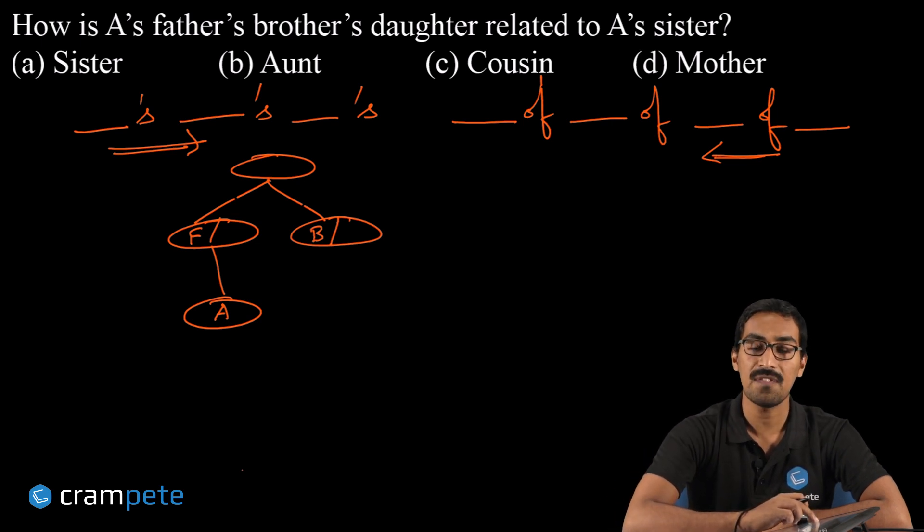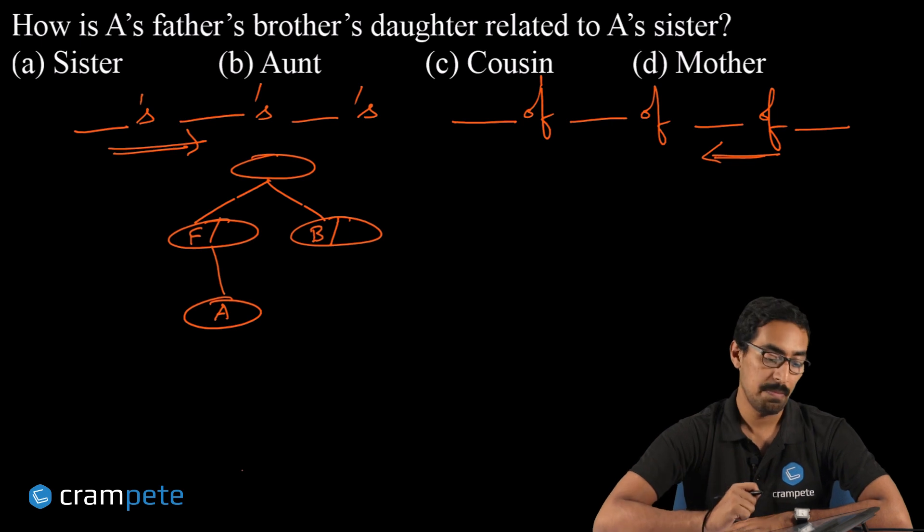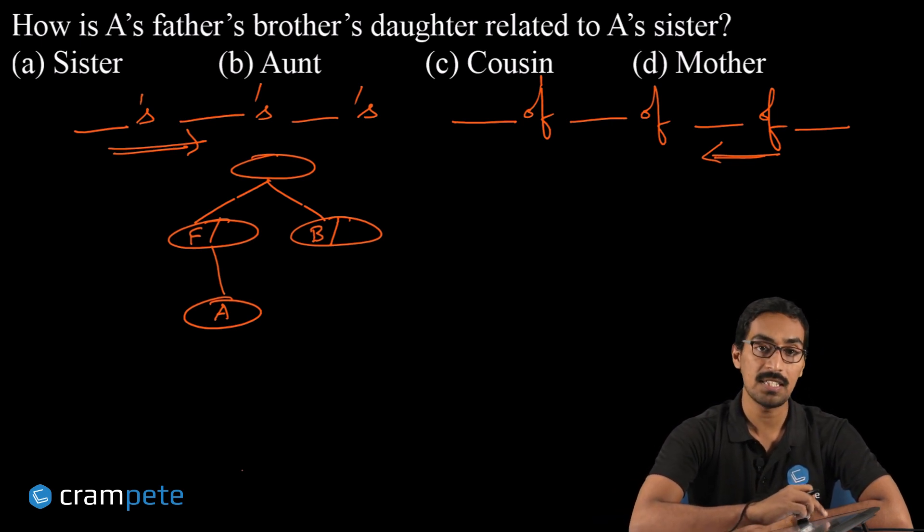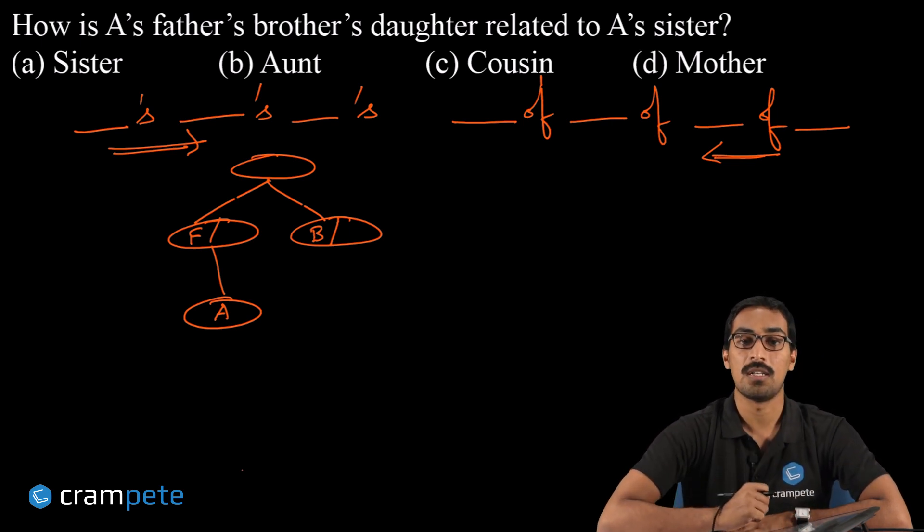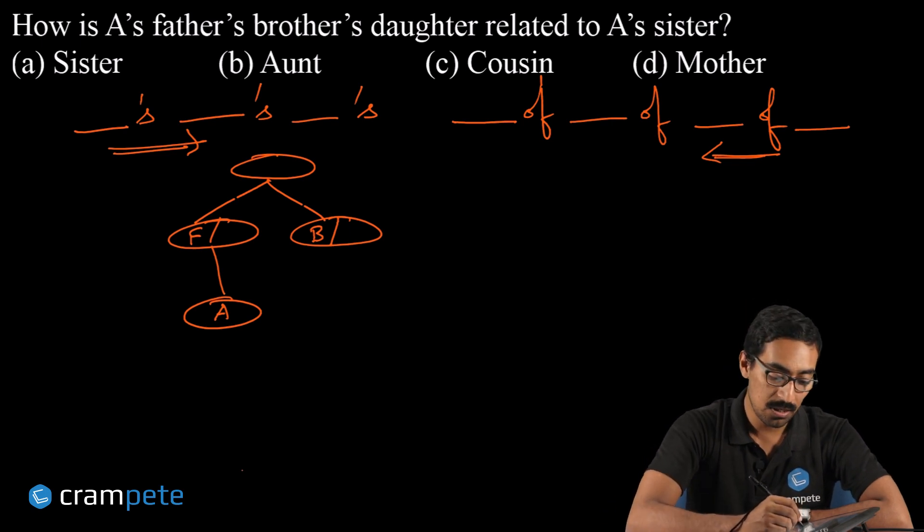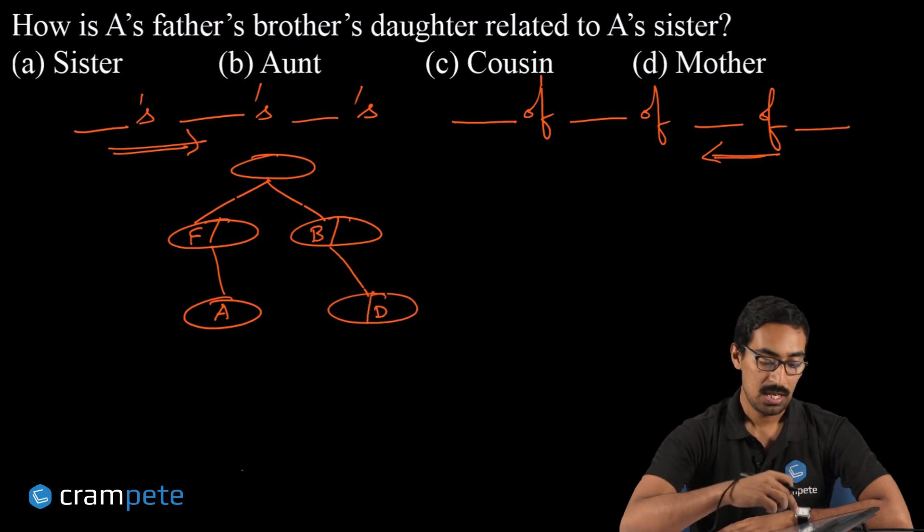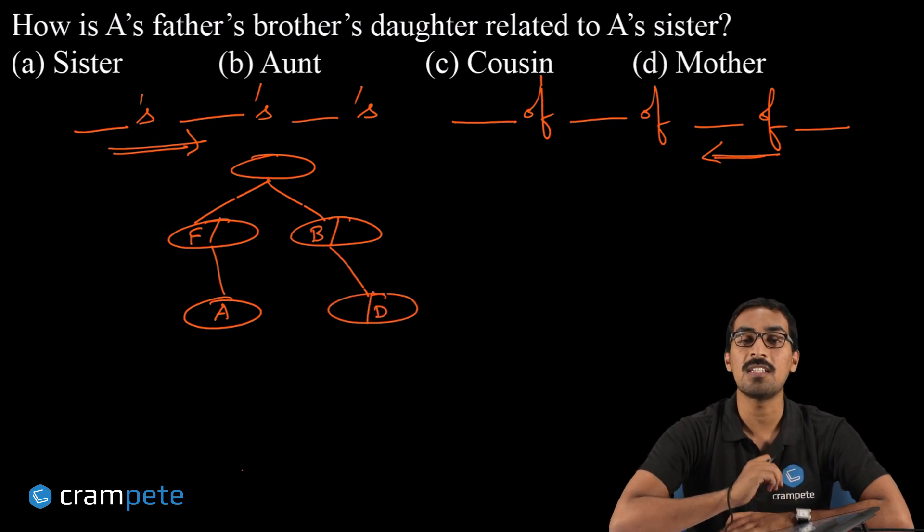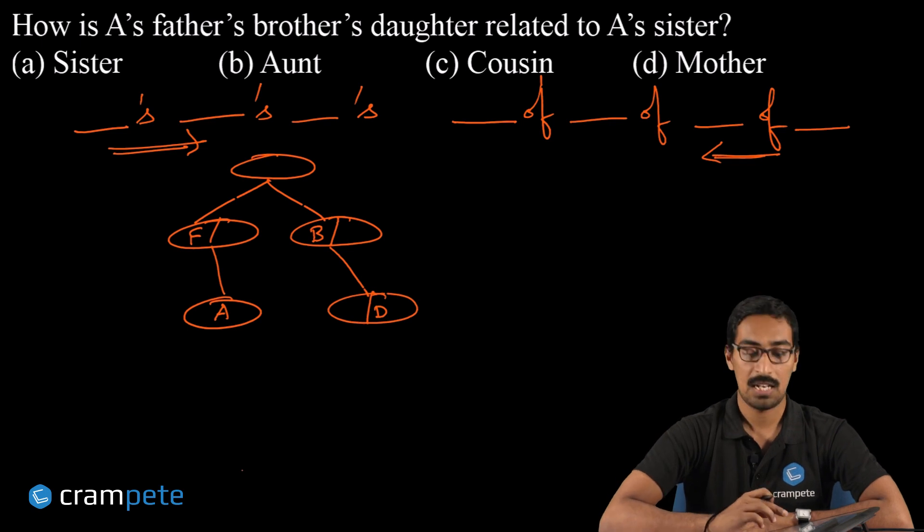Let's keep naming as per our comfort: A, A's father if father is F, father's brother is B. A's father's brother's daughter—so now this brother has a daughter. Let us denote her by D.